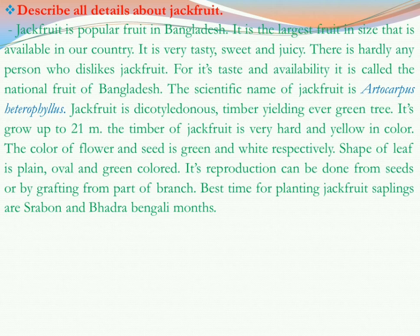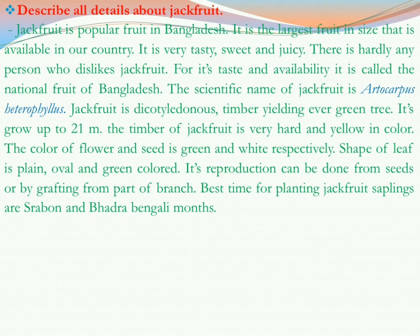Now let us know what type of tree jackfruit actually is. Jackfruit is a dicotyledonous, timber-yielding evergreen tree. It grows up to 21 meters. The timber of jackfruit is very hard and yellow in colour. The colour of the flower and seed is green and white respectively. The shape of the leaf is plain, oval and green in colour.